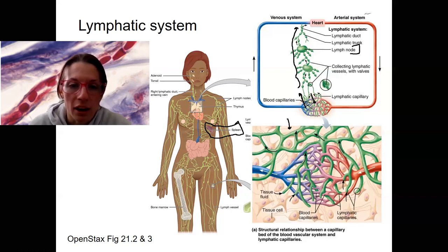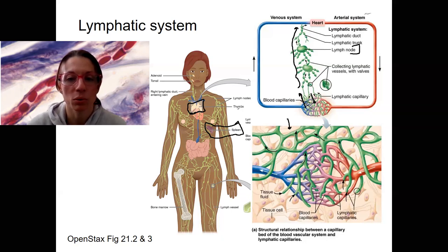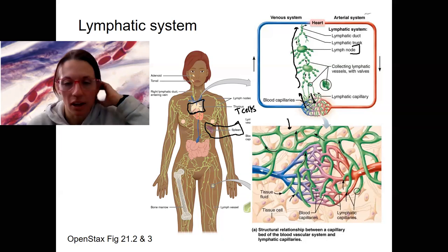We've got the thymus. This was on top of the heart that you saw in the rat — you had to cut through it to get to the great vessels when we looked at the rat heart. The thymus is important for T cells — thymus, T cells. It's a type of lymphocyte that are activated and mature in the thymus, so it has primarily immune function.